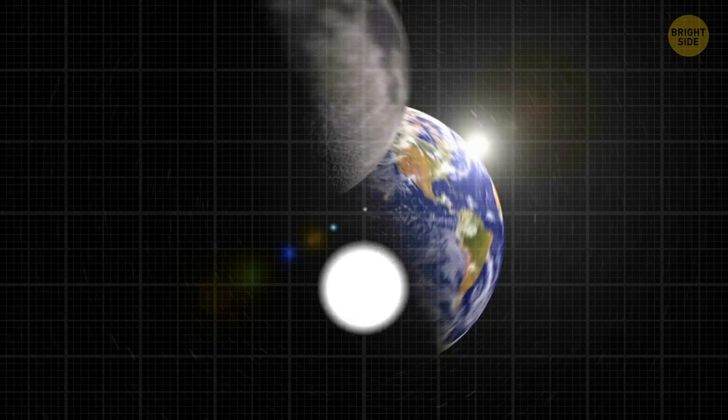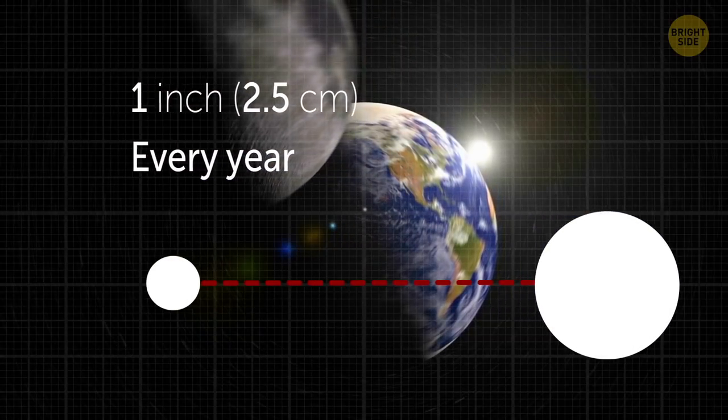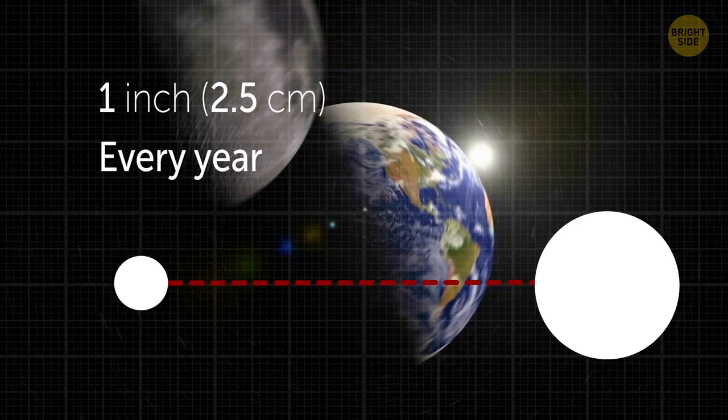Our Moon is moving around 1 inch away from Earth every year. That causes the Earth's rotation to slow down too.